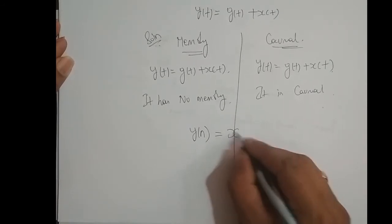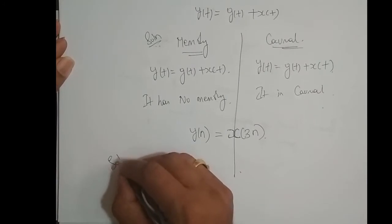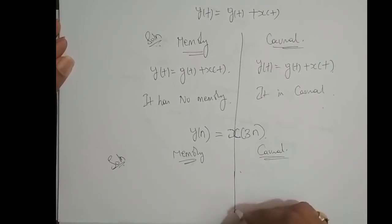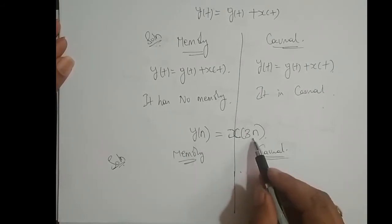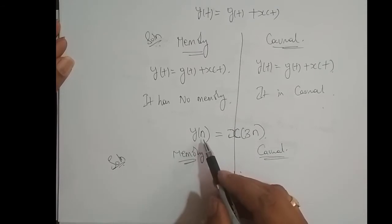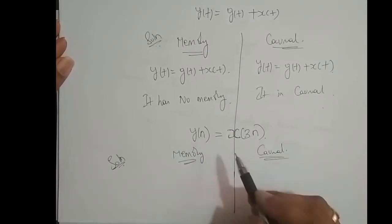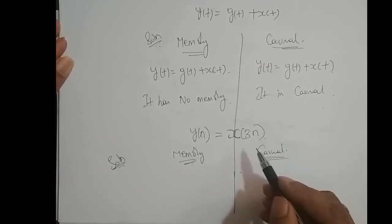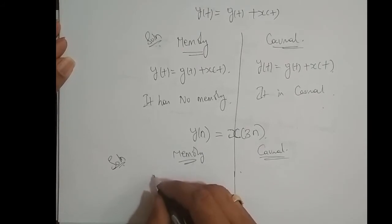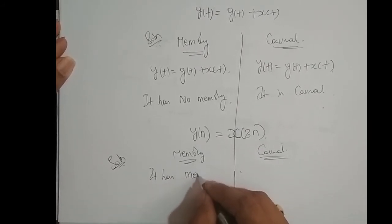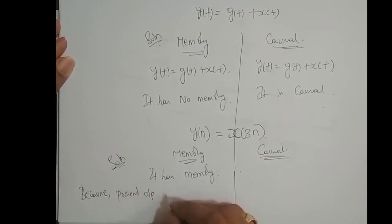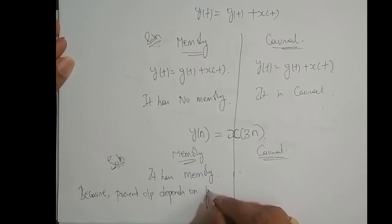Next example: y[n] = x[3n]. Checking for memory: if I put n = 10, the input becomes x[30]. So the output at n = 10 depends upon the future input value at 30. If the present output depends upon future or past input value, the system has memory. In this case, present output depends upon future input value. Therefore, it has memory, because present output depends on future input value.